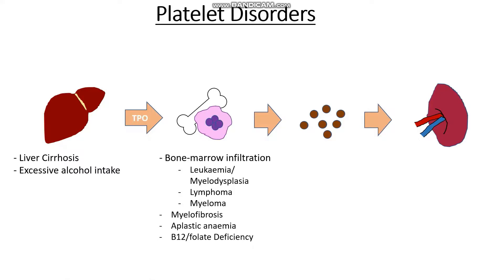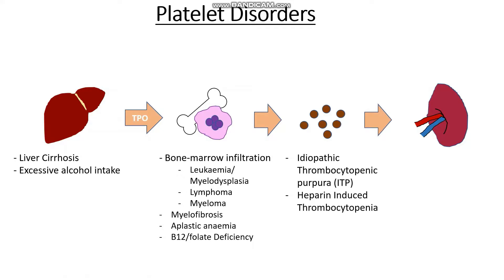The next thing might be an issue with the platelets themselves. For instance, if we had an immune attack or antibodies against our platelets in the case of idiopathic or immune thrombocytopenic purpura, or ITP, our platelets tend to get attacked by our own immune system. Another thing that could happen is iatrogenic, where we give a medication to our patients, which causes them to develop antibodies, in things like heparin-induced thrombocytopenia, where the administration of heparin actually causes the breakdown of platelets. And we'll get into both of these conditions in the coming slides.